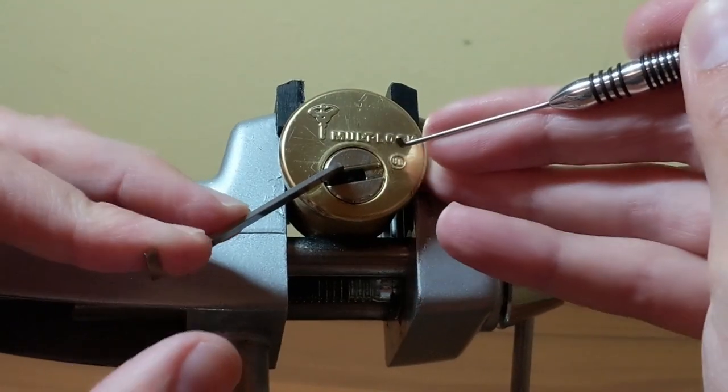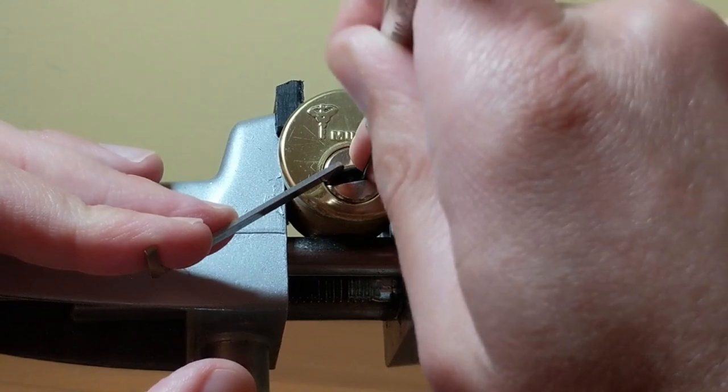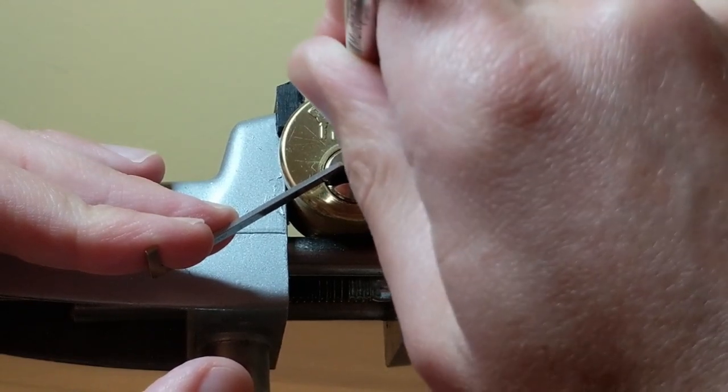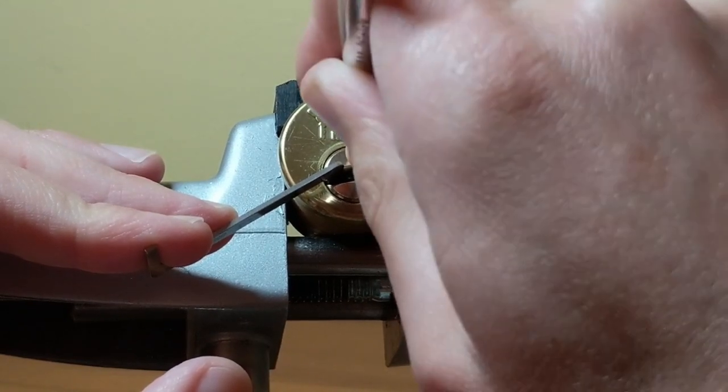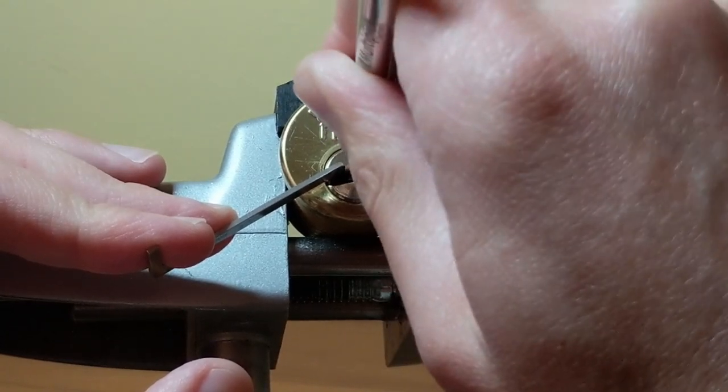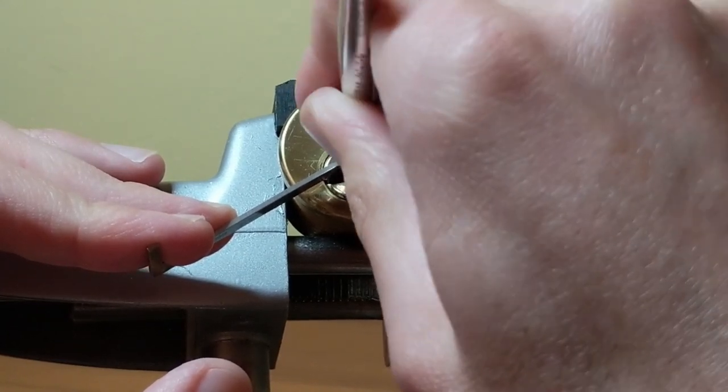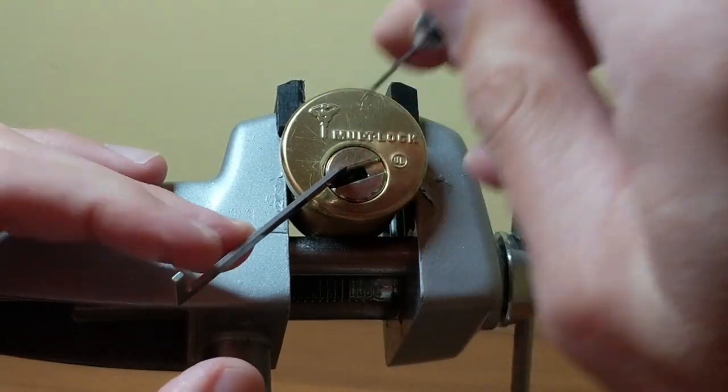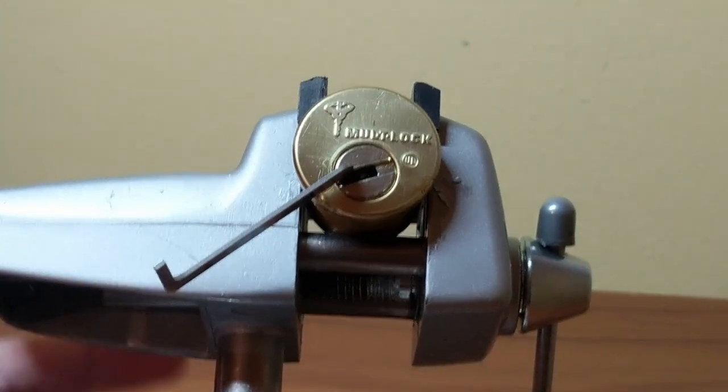I lightly touch pin 3 and then drop into a deep false set. From here, it's a matter of going through the lock and setting the inner driver pins. In general, it's fairly difficult to overset them, so you'll see that my technique becomes a bit more random and less precise. All right, and the lock is now picked.